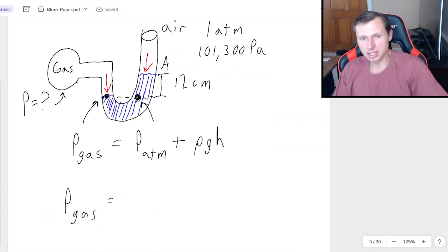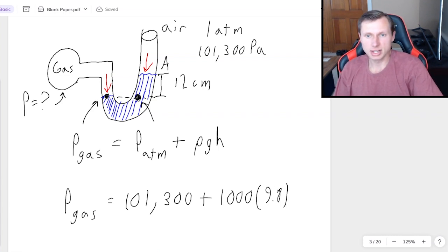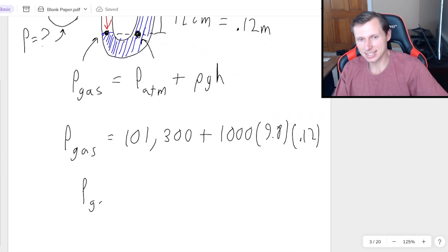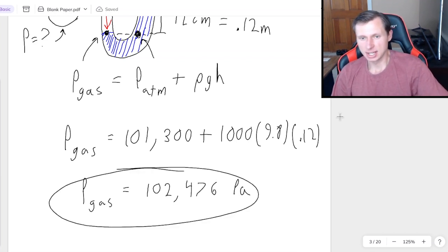But anyways, now I have everything I need. Pressure of the gas is going to be, I'll keep it in pascals, so 101,300 plus density of water, this is still 1000. G is still 9.8. And the height, 12 centimeters. We do have to convert that to meters, so that's easy. 0.12, just divide by 100. And then we just need to plug this in a calculator, and we'll have the pressure of the gas. And that's going to be slightly higher than the atmosphere, 102,476 pascals. And that's the answer.